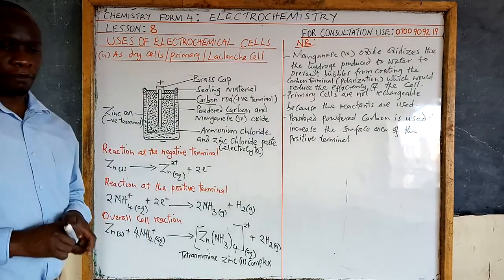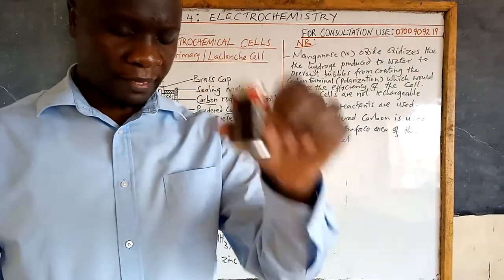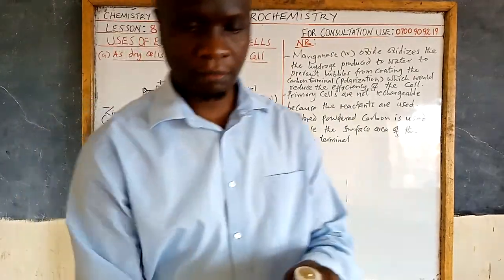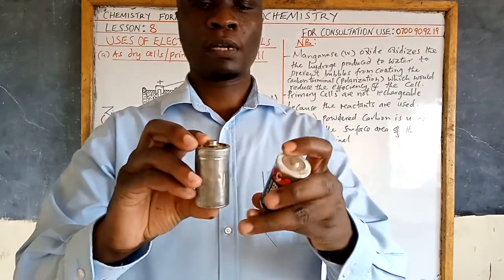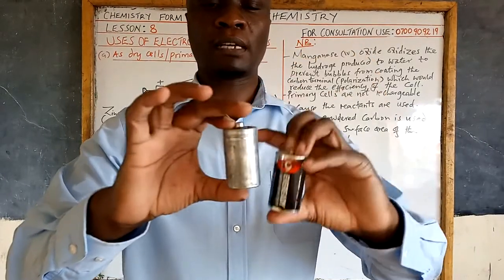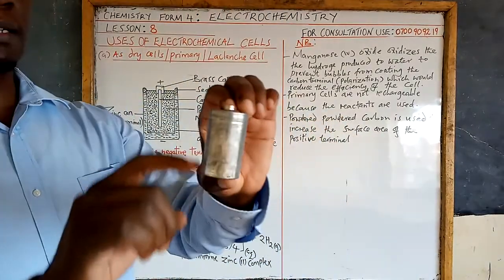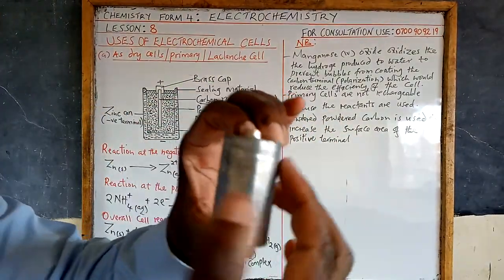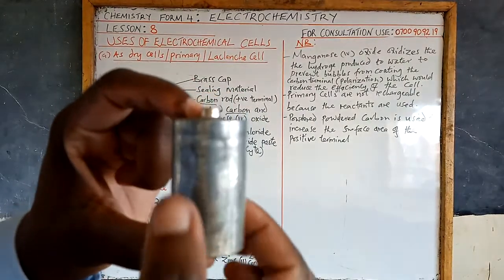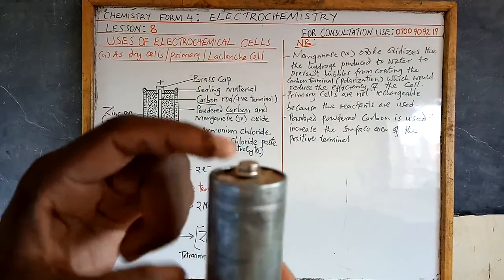If we open up this cell and remove the cover, we can see what's inside. When we remove the outer cover, this is what we are referring to as the zinc can. That shiny metallic part all around — that is the zinc can.